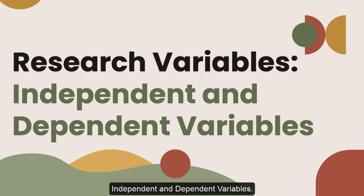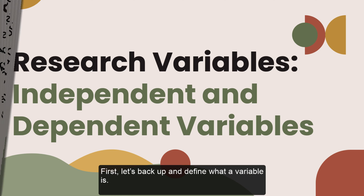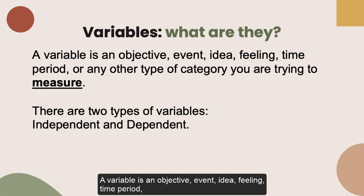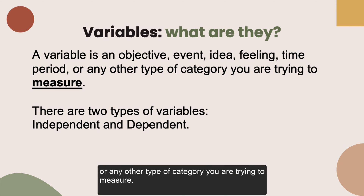Independent and Dependent Variables. First, let's back up and define what a variable is. A variable is an object, event, idea, feeling, time period, or any other type of category you are trying to measure. There are two types of variables: independent and dependent.